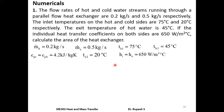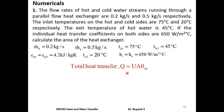We know that heat transfer rate q = U × A × θm, where U is the overall heat transfer coefficient, A is the area, and θm is the LMTD. If we find q, U, and θm and substitute in this equation, we can find area A. We will evaluate θm first.